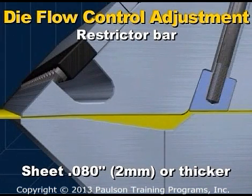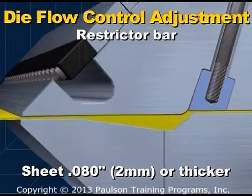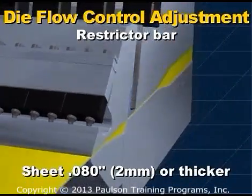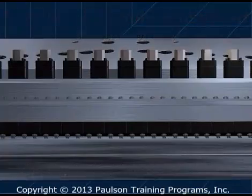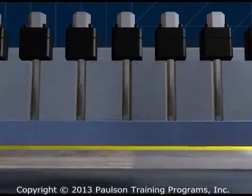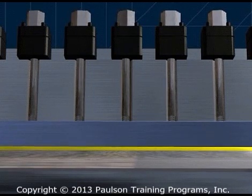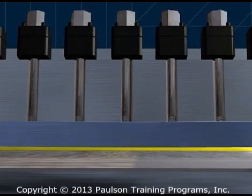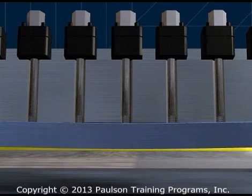For thick sheet, the restrictor bar adjustment is used to make major changes in the flow rate inside the die. Adjustment bolts on the restrictor bar allow flow passage height to be changed in specific areas across the die. For example, closing the restrictor bar in the center will reduce the passageway thickness and decrease flow rate. Flow is diverted to where there is less resistance, away from the center.